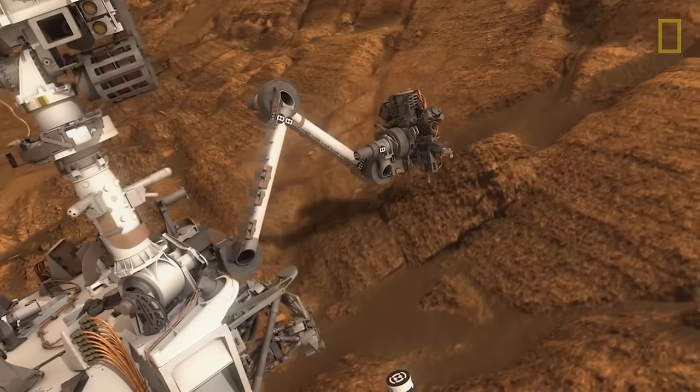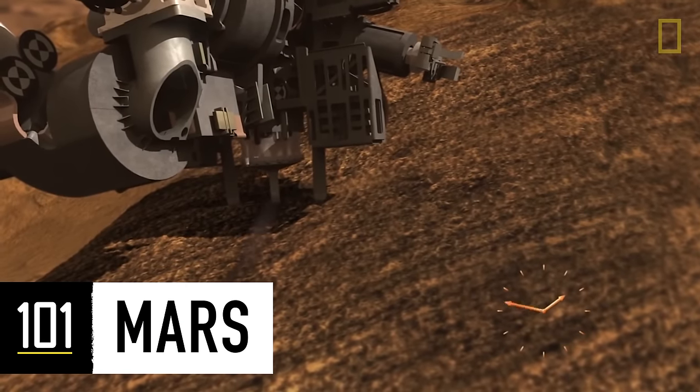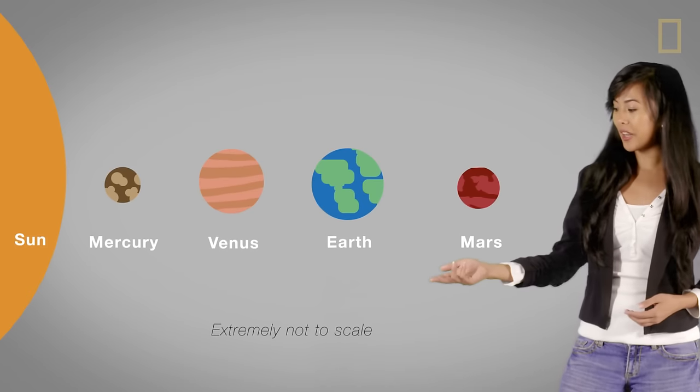But what is Mars made of, and could humans ever live there? This is Mars 101. Mars is the fourth planet from the Sun.